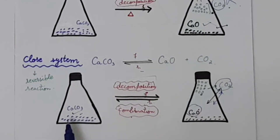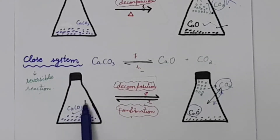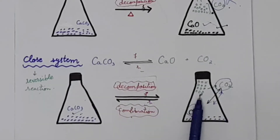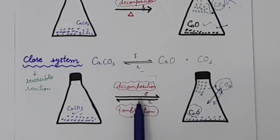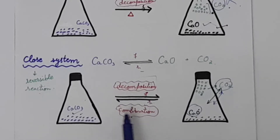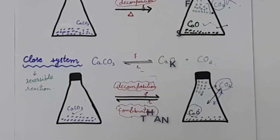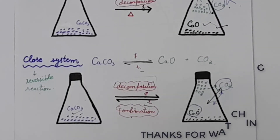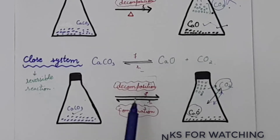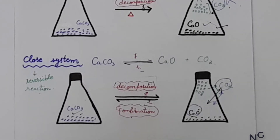Since the gas is trapped, the decomposition is followed by combination again — this is the reverse reaction. In the reverse reaction, calcium oxide and carbon dioxide recombine to form calcium carbonate again. This is called a reversible reaction, which occurs in a closed system.